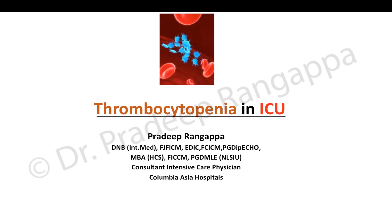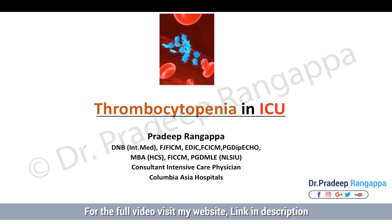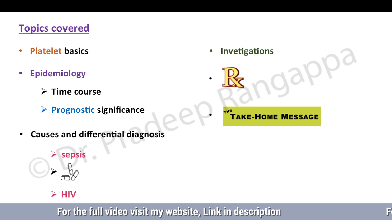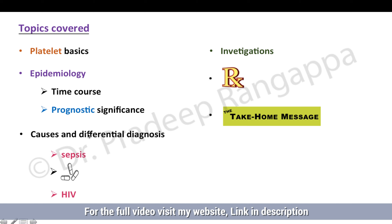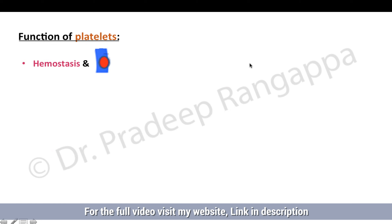I will be talking about thrombocytopenia in ICU. This question was asked in one of the DNB question papers, around 2008 or 2010. The topics I will be covering are platelet basics, epidemiology, time course of thrombocytopenia, prognostic significance, causes and differential diagnosis — predominantly sepsis, drugs, and HIV — investigations, treatment, and take-home message.